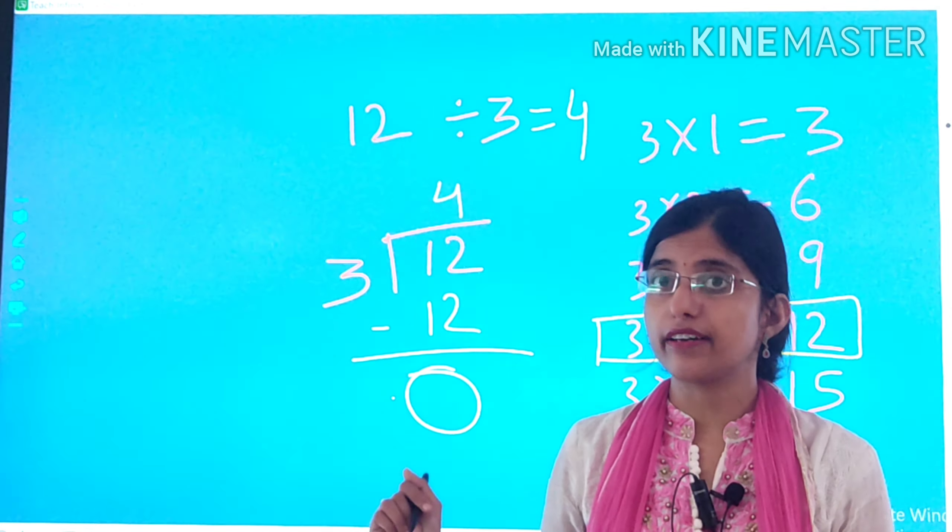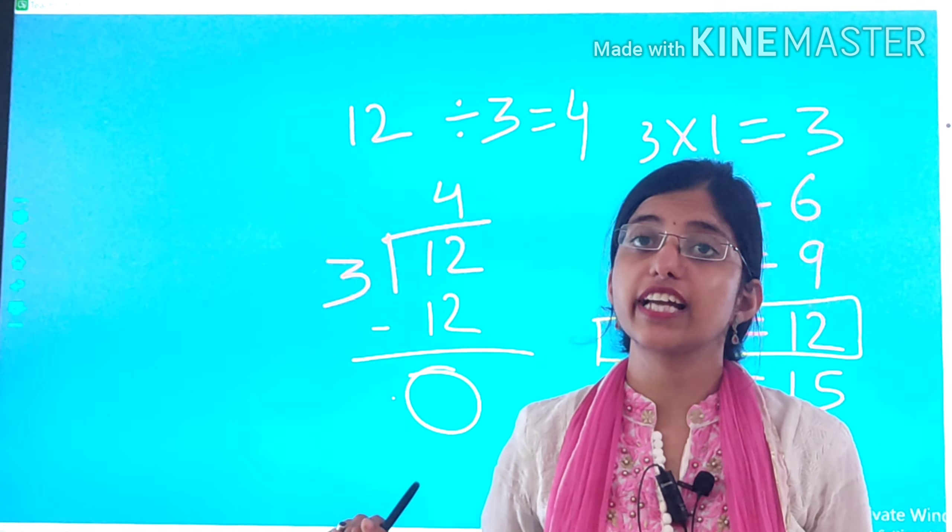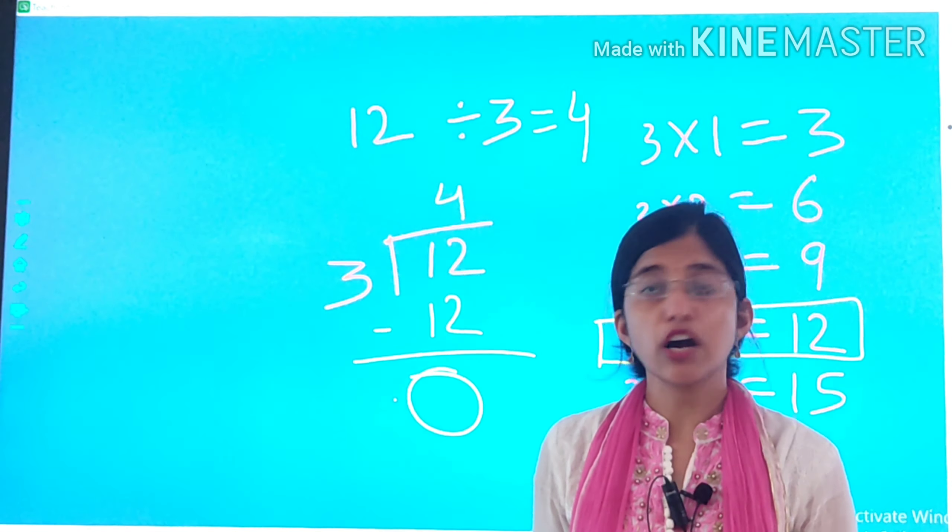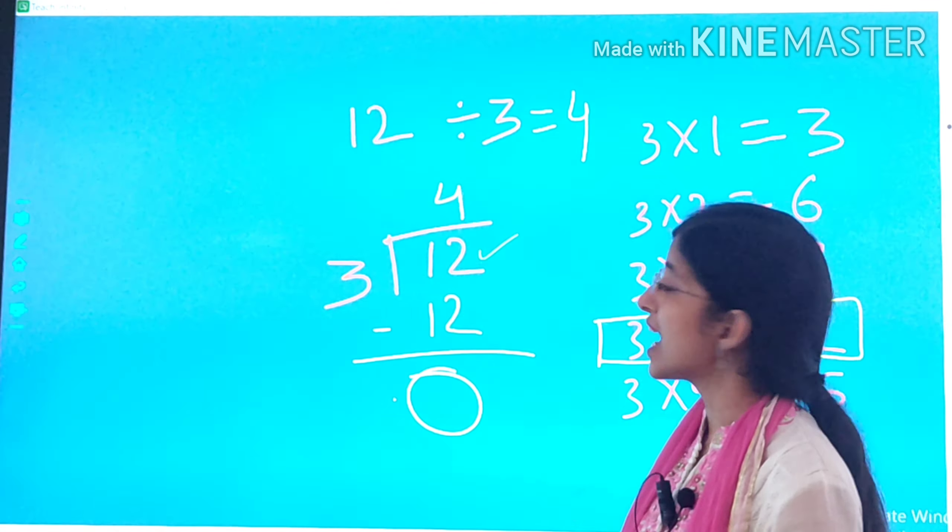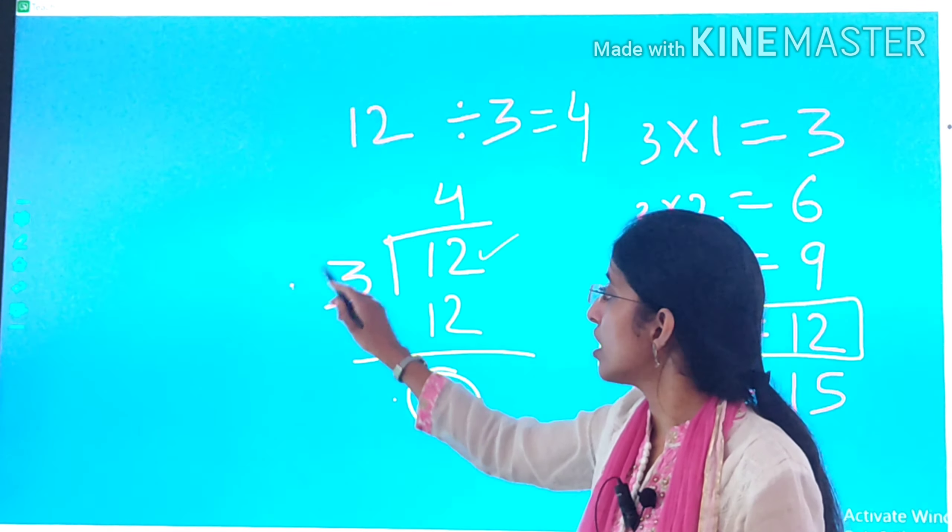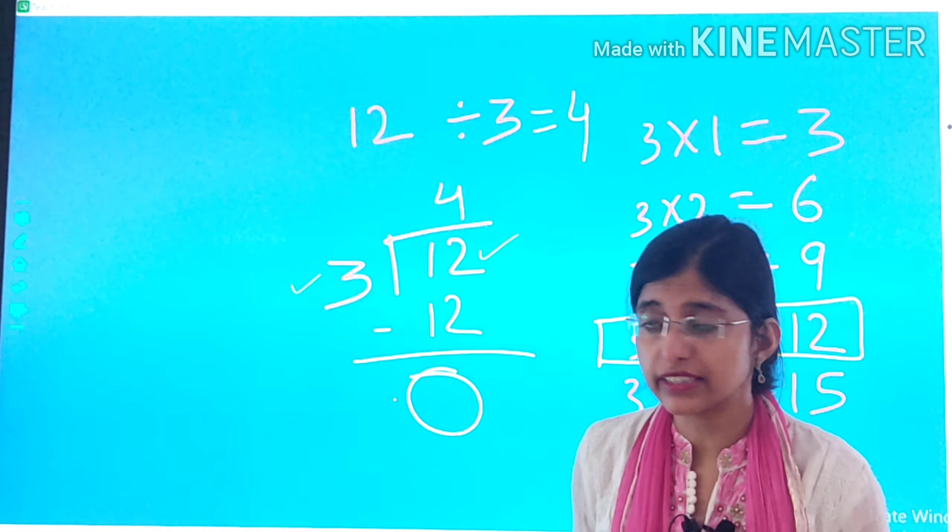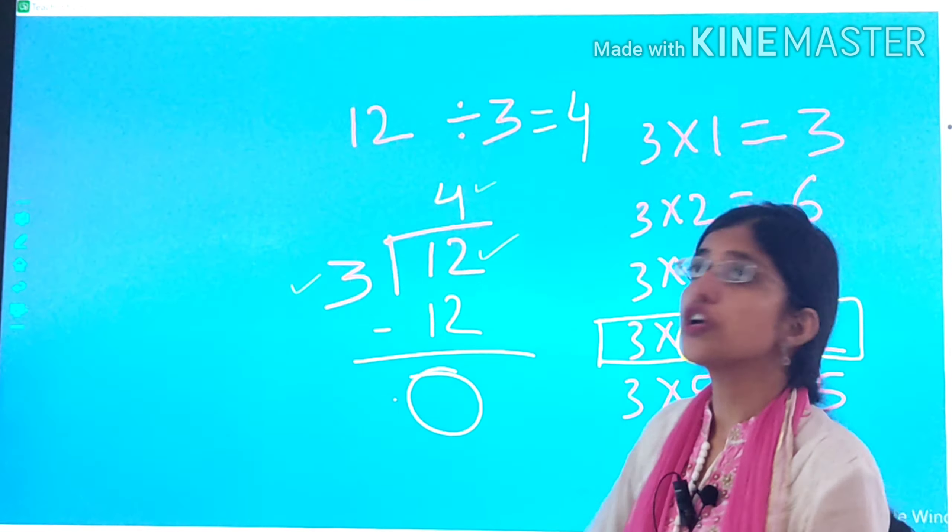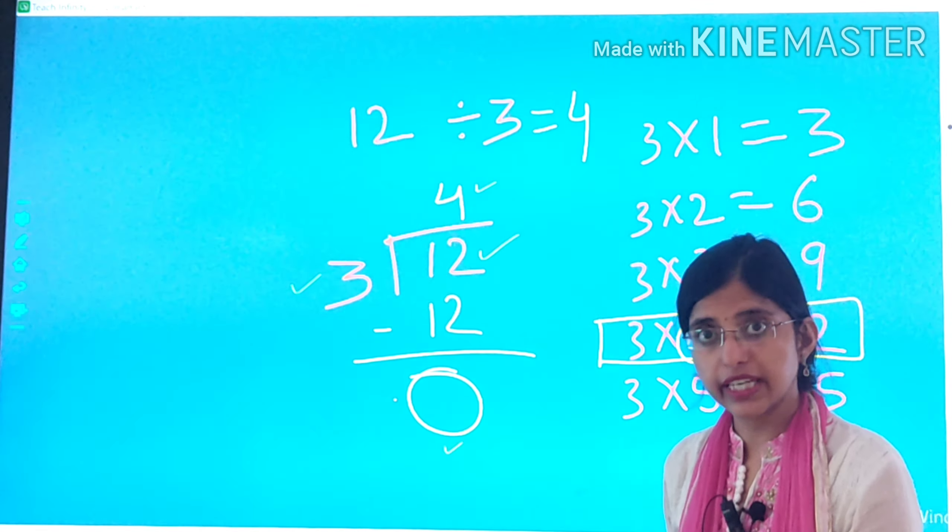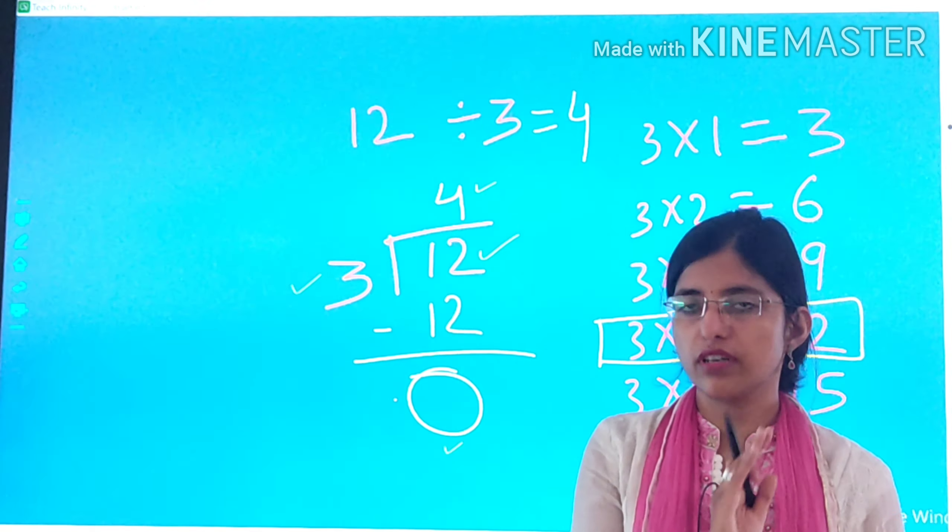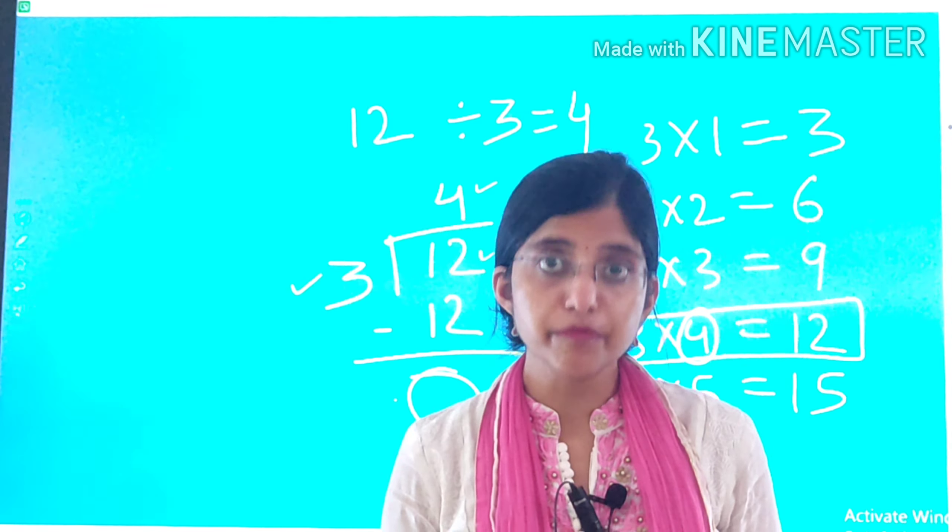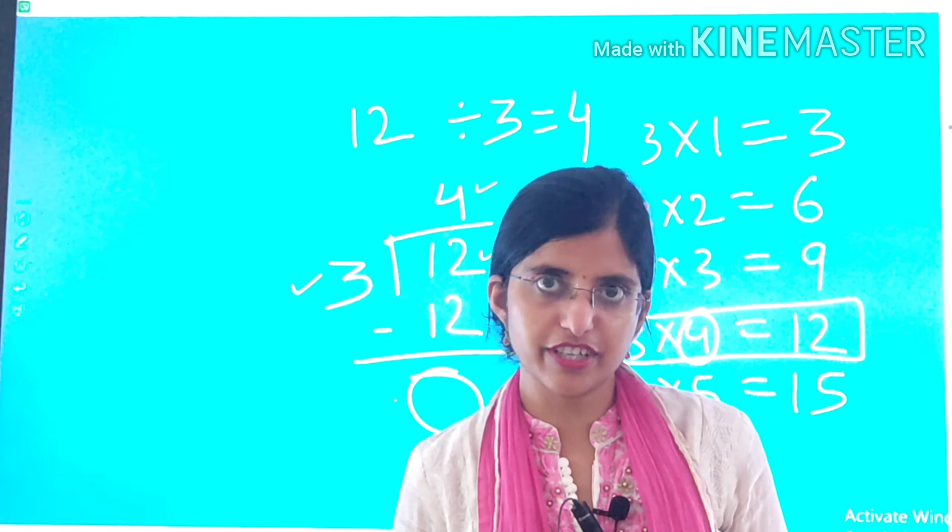So our answer is 12 divided by 3 is equal to 4. We learned this in second standard and now we have revised it. Now children, 12 is known as dividend. 3 is called divisor, and 4 is our quotient, and 0 is our remainder. This is what you have learned in your second standard. We have just revised it. Now we will see properties of division.